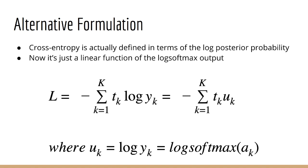The reason for this is the cross entropy function is actually defined in terms of a log of the posterior probability, which is exactly the log softmax. Therefore it's just a linear function of the output of the log softmax. If we call the result of the log softmax u, then it's just the sum of all the tk's multiplied by the uk's.